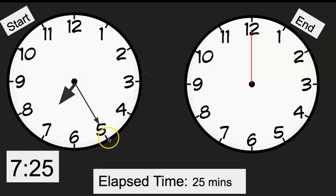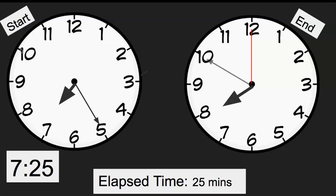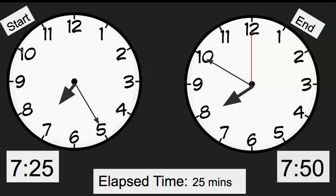Now I'm going to count up 25 minutes: five, ten, fifteen, twenty, twenty-five minutes. So now my hour hand has moved a little bit closer to the 8 because I'm getting closer, and my minute hand would be at the 10 — which would give us what time? If you wrote 7:50, you got it. Great work.